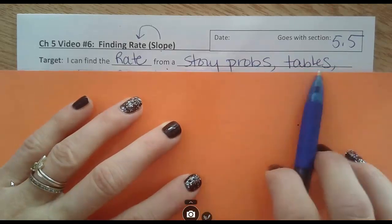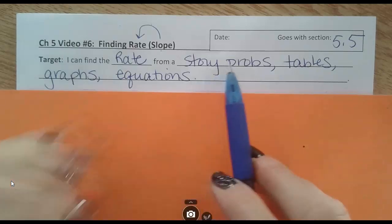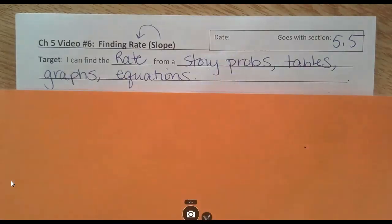Can we find the rate from a story problem, from tables, from graphs, from equations? Any kind of way they give us that different relationship, can we figure out what the rate is?